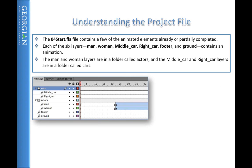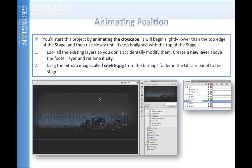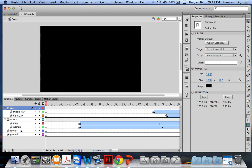We need to add a couple more layers. First, lock all the layers and create a new layer above the footer called 'city'. Here's the footer — I'll add a new layer and call it city.